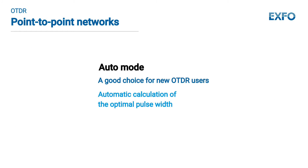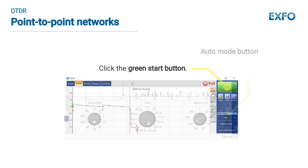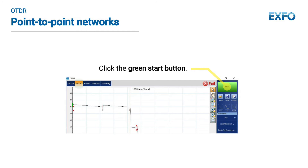OTDRs can be complex to use, yet they offer automated features to facilitate the setup and reading the results. For users new to the OTDR world, making sure that the unit is set into auto mode is a good option. As you press the start button, the OTDR will explore the link and use what it calculates as the optimal pulse width to perform an automated measurement, giving you the link length and link loss.